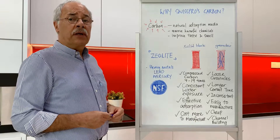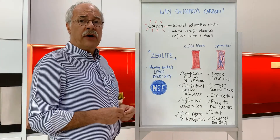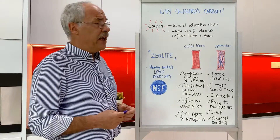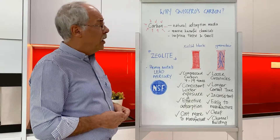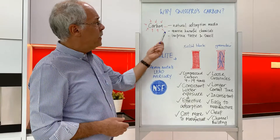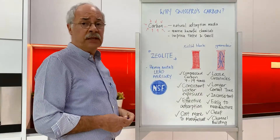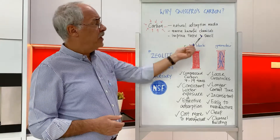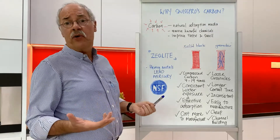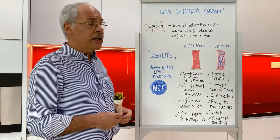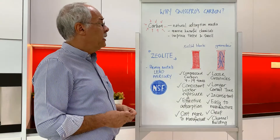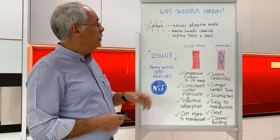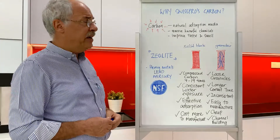Activated carbon cartridges are a typical part of a water filtration system, and most brands carry it. It's a natural absorption media that mainly addresses harmful chemicals such as chlorine or pesticides. It also improves taste and smell — this is the key focus of activated carbon.